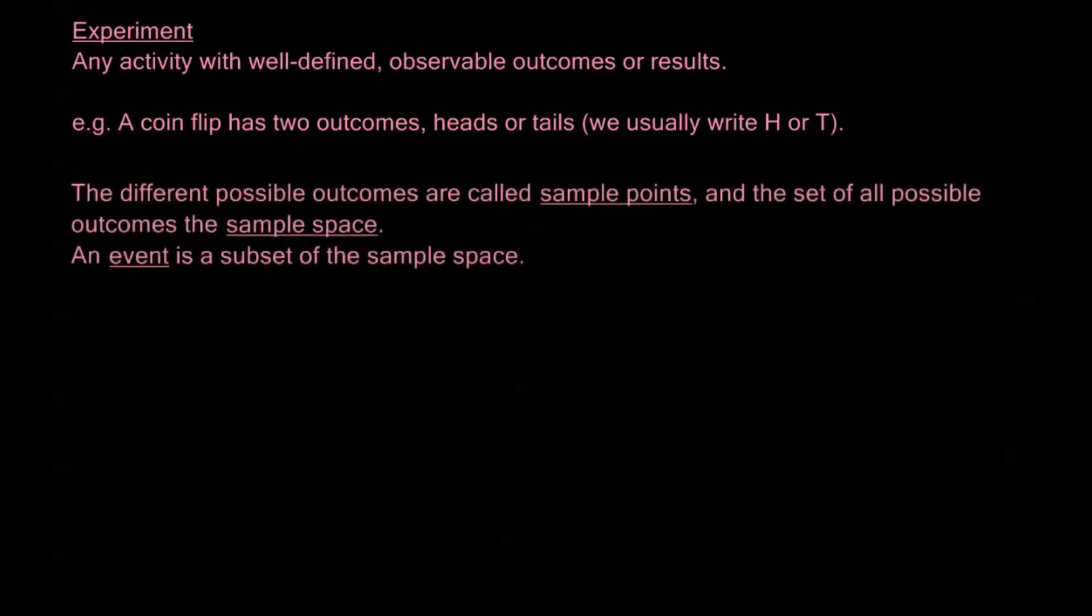Now the different possible outcomes of an experiment are called sample points and the set of all possible outcomes is the sample space. So for a coin flip, the sample points are just H or T and the set of all possible outcomes would be the set {H, T}, and an event is a subset of a sample space.